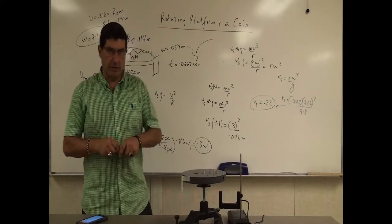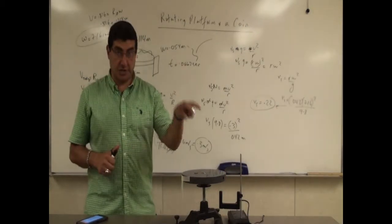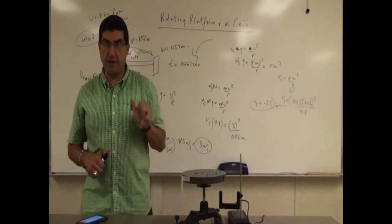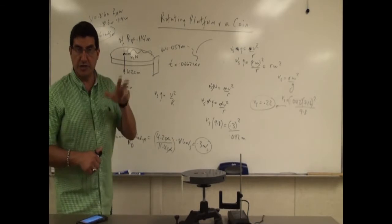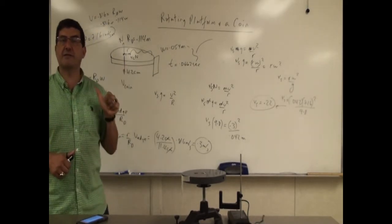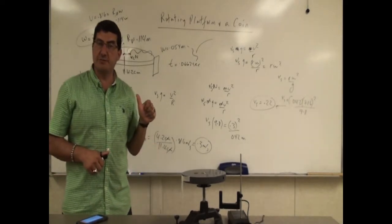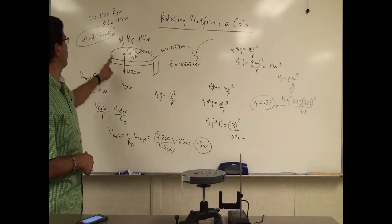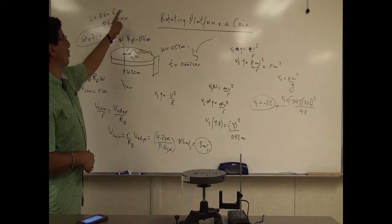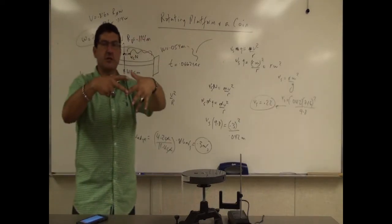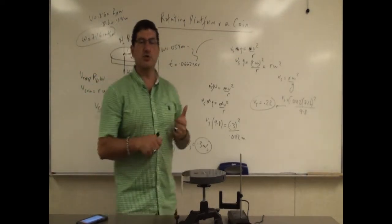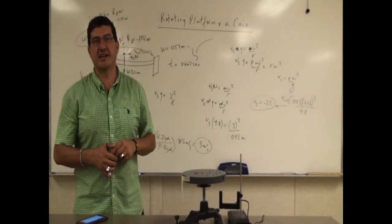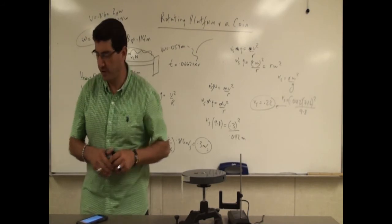So this is a good problem in centripetal acceleration. It's also a good problem with Newton's second law, the friction force μs·N, and f = ma. It also involves rotational velocity and the concept that v = r·ω. It brings many topics into one and uses them to analyze the position where a coin can be placed so that it does not slide off the rotating platform. Thank you very much.